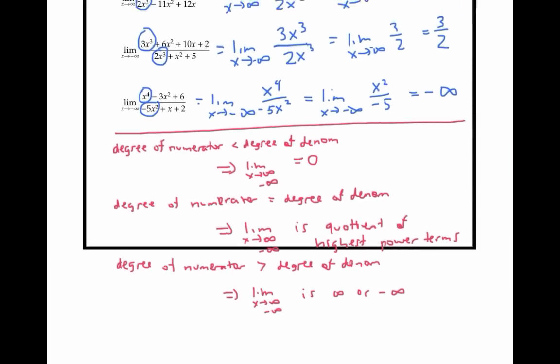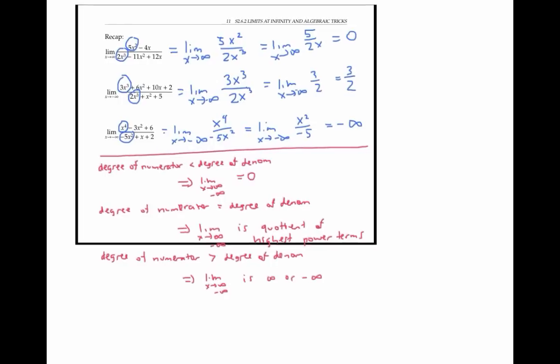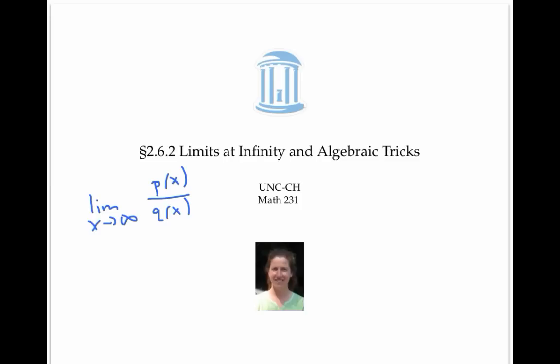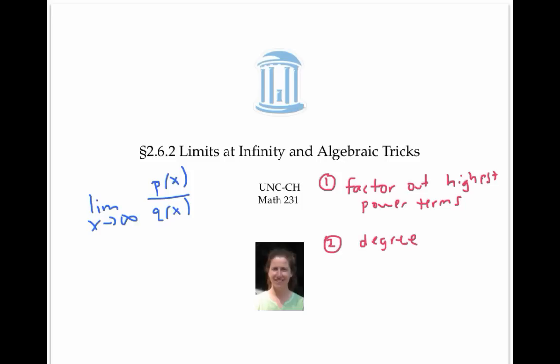These shortcut rules are really handy, but it's important to also understand the technique of factoring out highest power terms, since this technique can be used more generally. This video gave two methods for computing limits at infinity of rational functions: first, the formal method of factoring out highest power terms and simplifying; second, the informal method of looking at the degree of the numerator and the degree of the denominator, and focusing on the highest power terms.